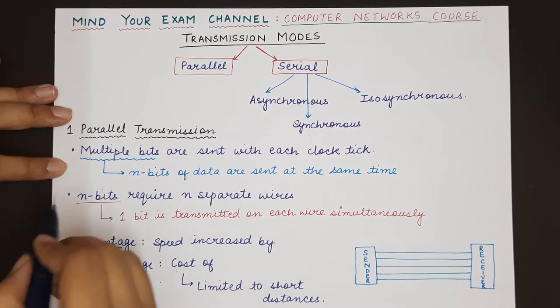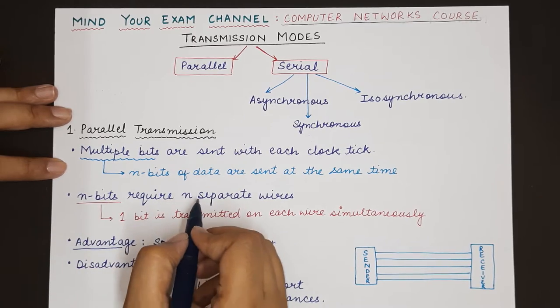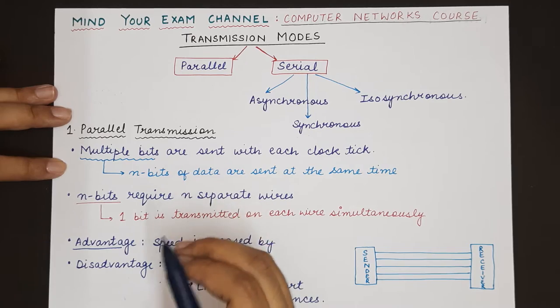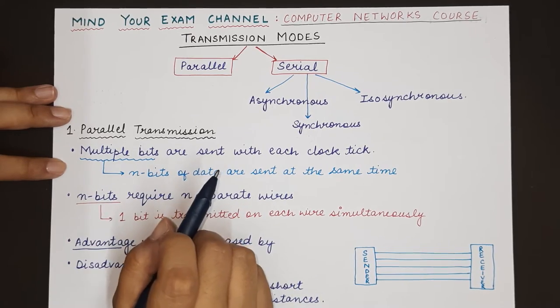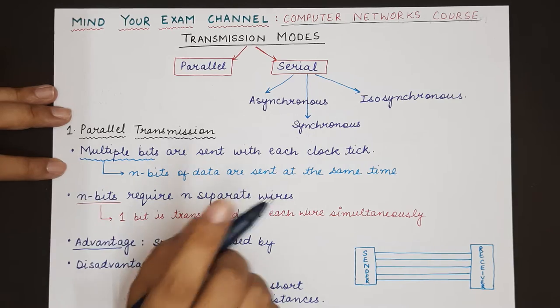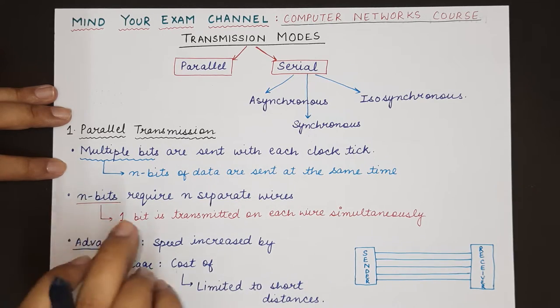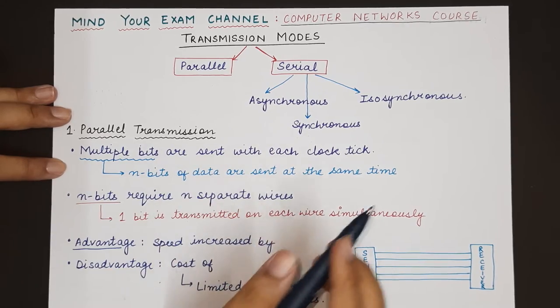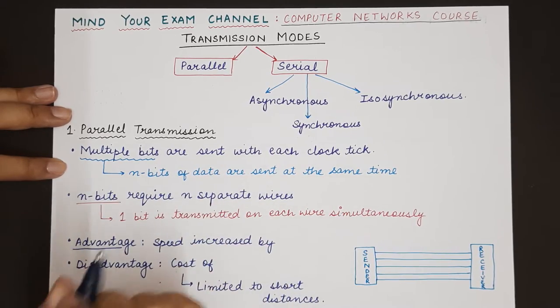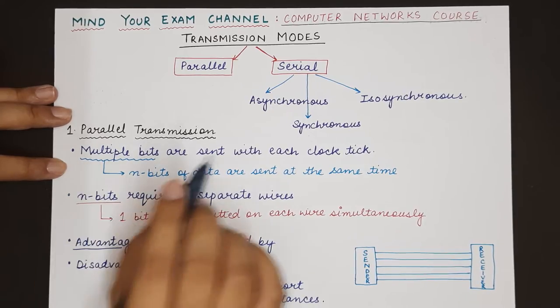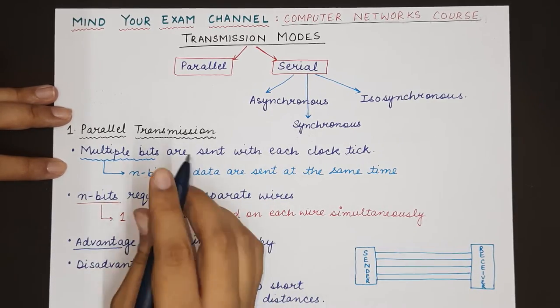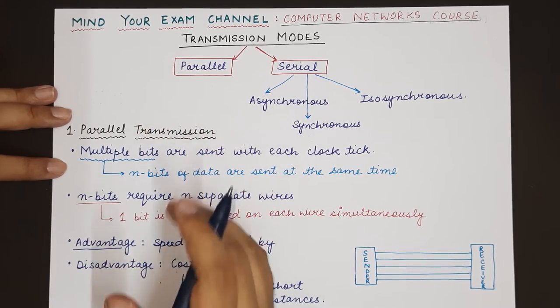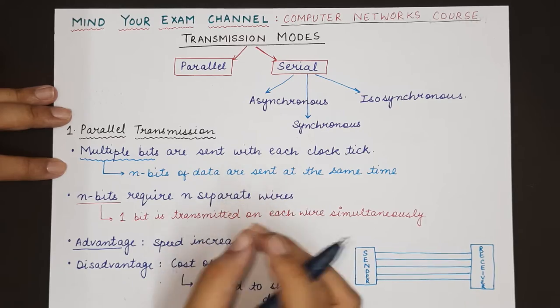This is possible when we have multiple channels. For each of the n bits we require a separate wire that can carry the bits separately. One bit can be transmitted at one moment in a wire, so if we have to transmit multiple bits at the same time, we need multiple wires.